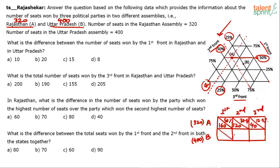Now do the same for assembly B. For the First Front, drawing the line through B, it falls between 25% and 50%, giving 37.5%. For the Second Front, the line through B falls exactly on the 25% line, so the Second Front for assembly B is exactly 25%. That means the Third Front must be 37.5%, since 37.5 + 25 + 37.5 = 100.